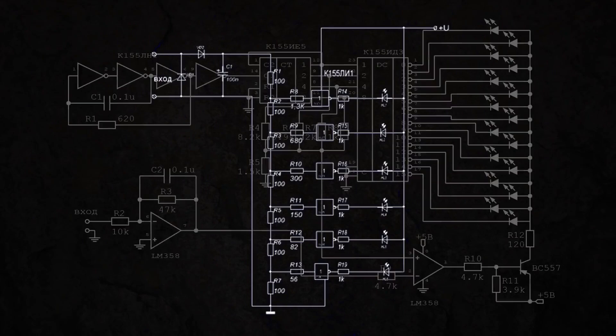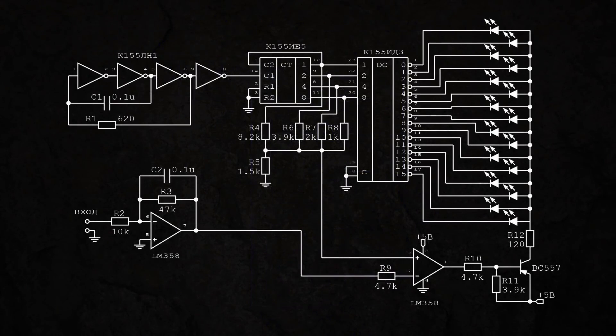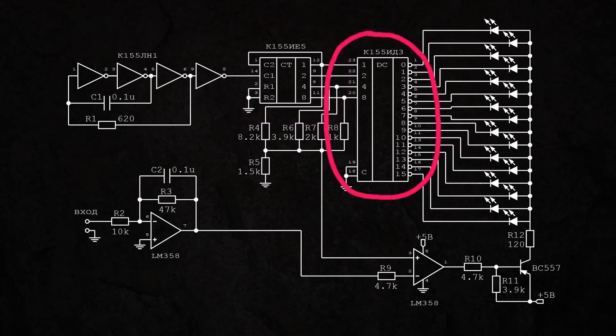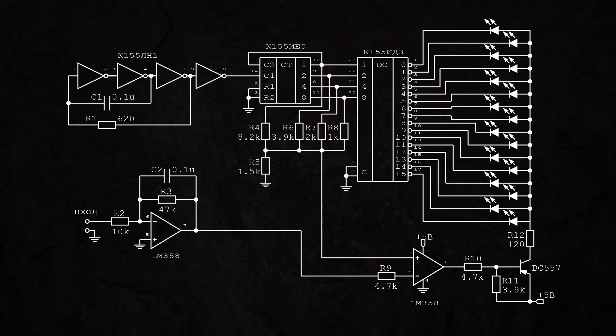In today's video, I propose to consider the following circuit. It is built on the basis of a clock generator, a 16-counter, and a decoder. The circuit also includes an operational amplifier. Let's break down the circuit into parts and understand how it works.